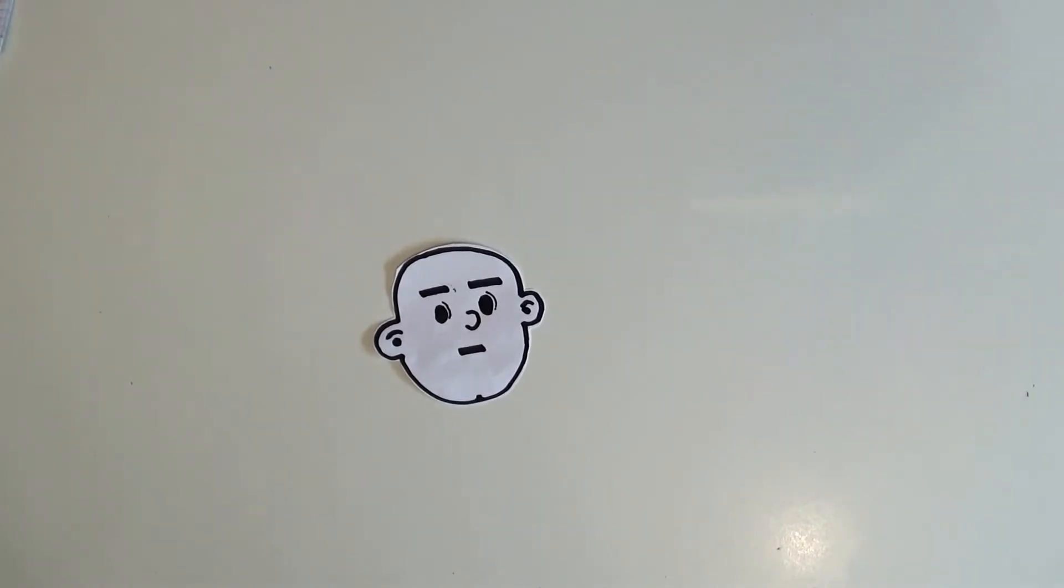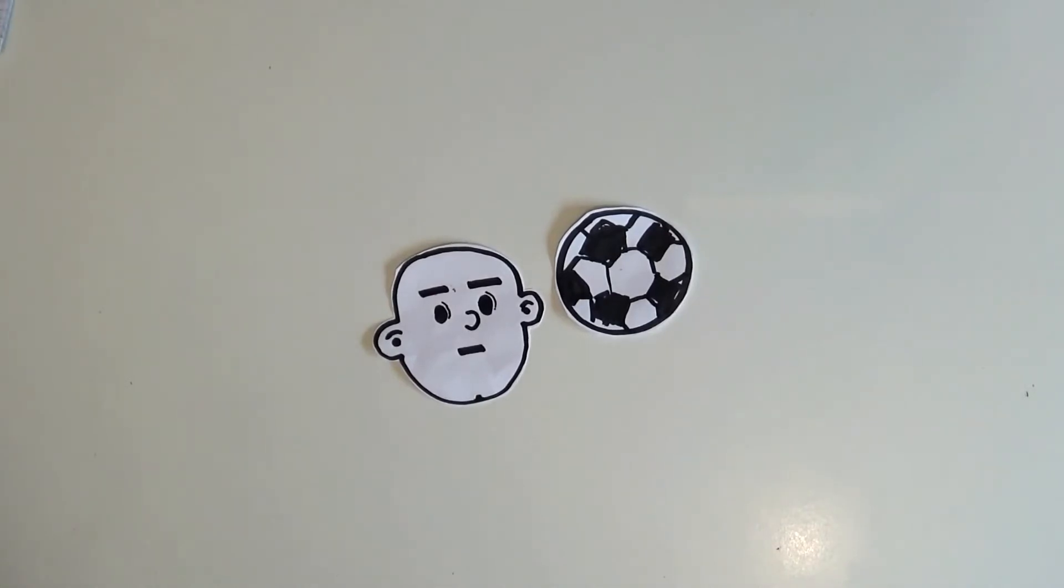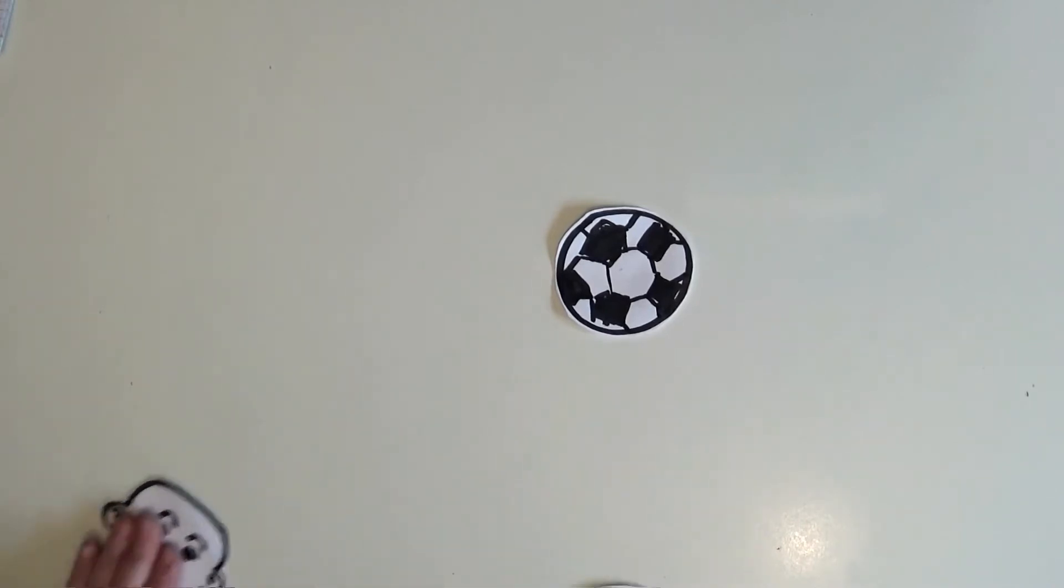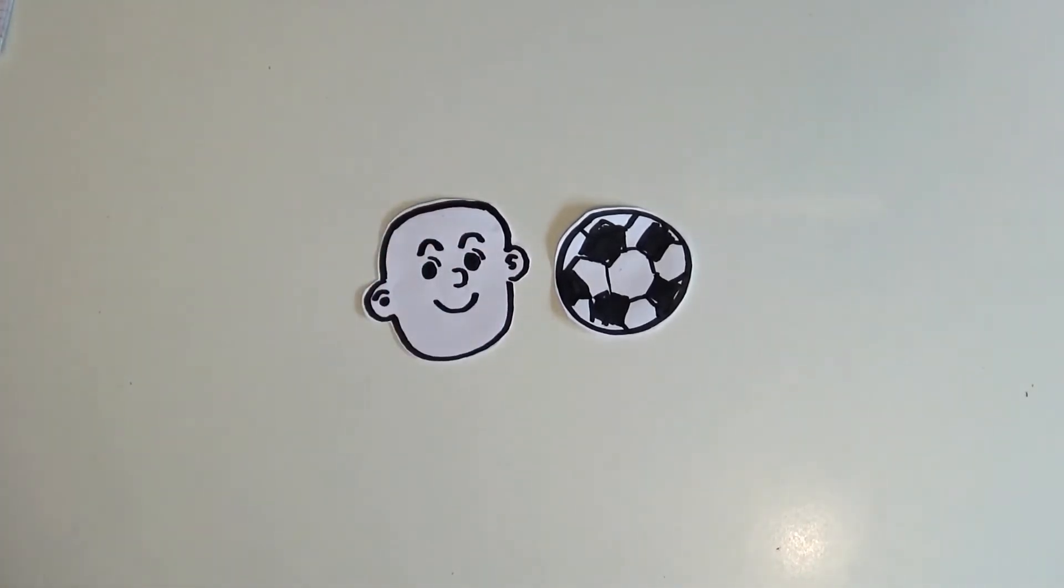So here we have our grumpy character. The next thing we found out is that our character Seamus really likes playing football. So we drew a football, cut it out and placed it next to our grumpy Seamus. We know that Seamus likes playing football so whenever he plays football he starts to feel happy. So we drew a happy face and we cut that out.